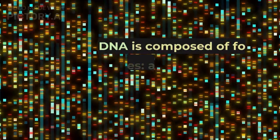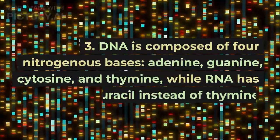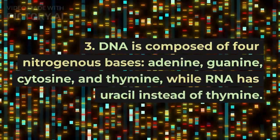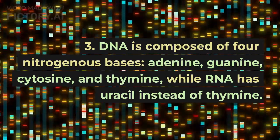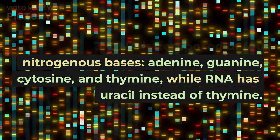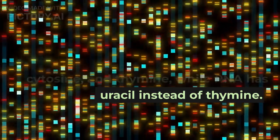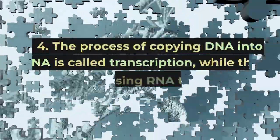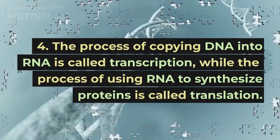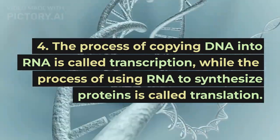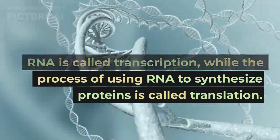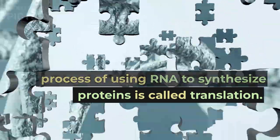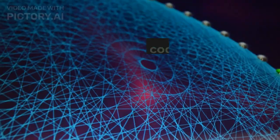DNA is composed of four nitrogenous bases: adenine, guanine, cytosine, and thymine, while RNA has uracil instead of thymine. The process of copying DNA into RNA is called transcription, while the process of using RNA to synthesize proteins is called translation.